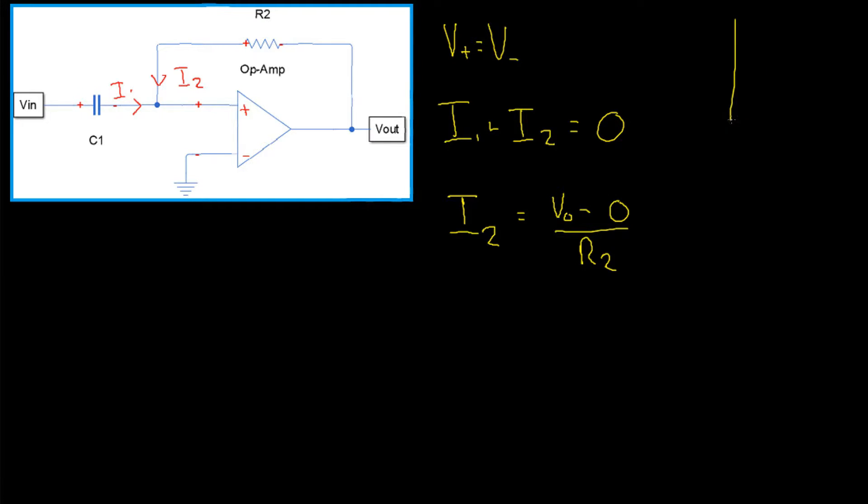Before we do I1, it's important to point out that the resistance of a capacitor is given by 1 over SC, where C is the capacitance of the capacitor and S is simply J omega, where omega is our frequency in radians per second. Don't worry, we're going to go into this further in future, but for now, let's just work out the equation for the circuit.